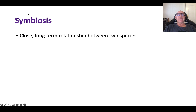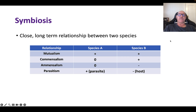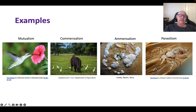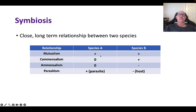Symbiosis refers to close, long-term relationships between two species. It's important that it's a long-term relationship — that's why predation isn't included. We classify symbiotic relationships based on whether the effect on each species is positive, negative, or zero. The first type is mutualism, where both species benefit. A classic example is a hummingbird accessing nectar from a flower: the flower benefits from pollen distribution, and the bird benefits by getting food.